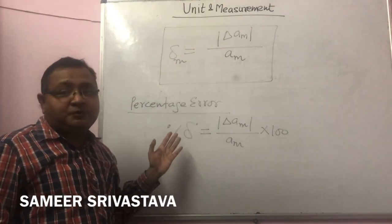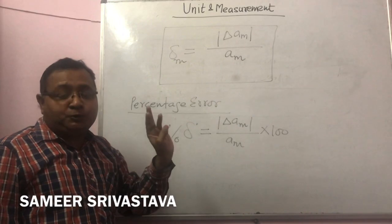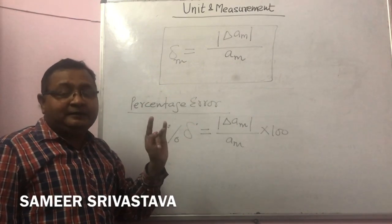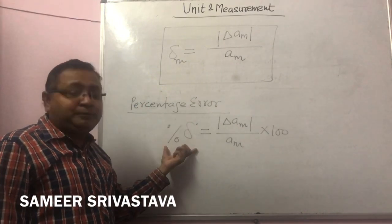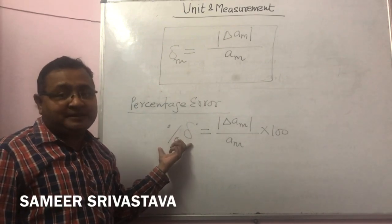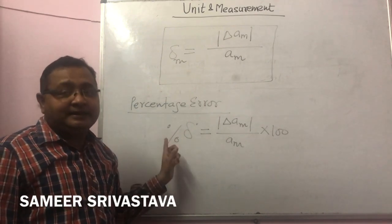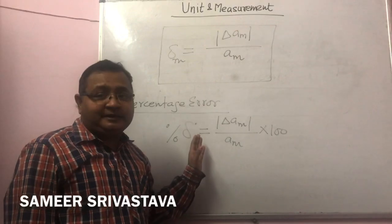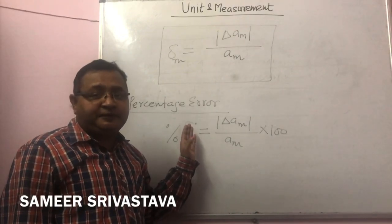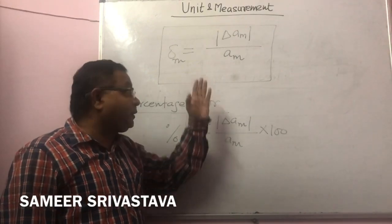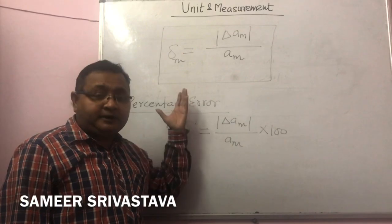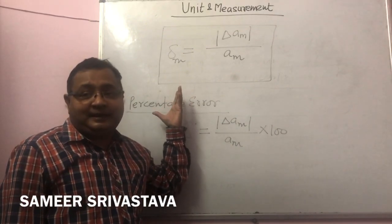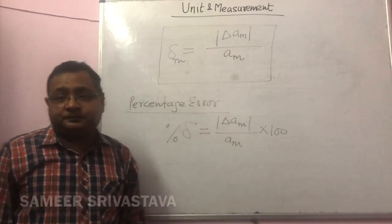So these are four types of error: absolute error, mean absolute error, relative or fractional error, and percentage error. Hope you understand today's topic. In my next video, I will apply these formulas with the help of some numerical examples. Thank you.